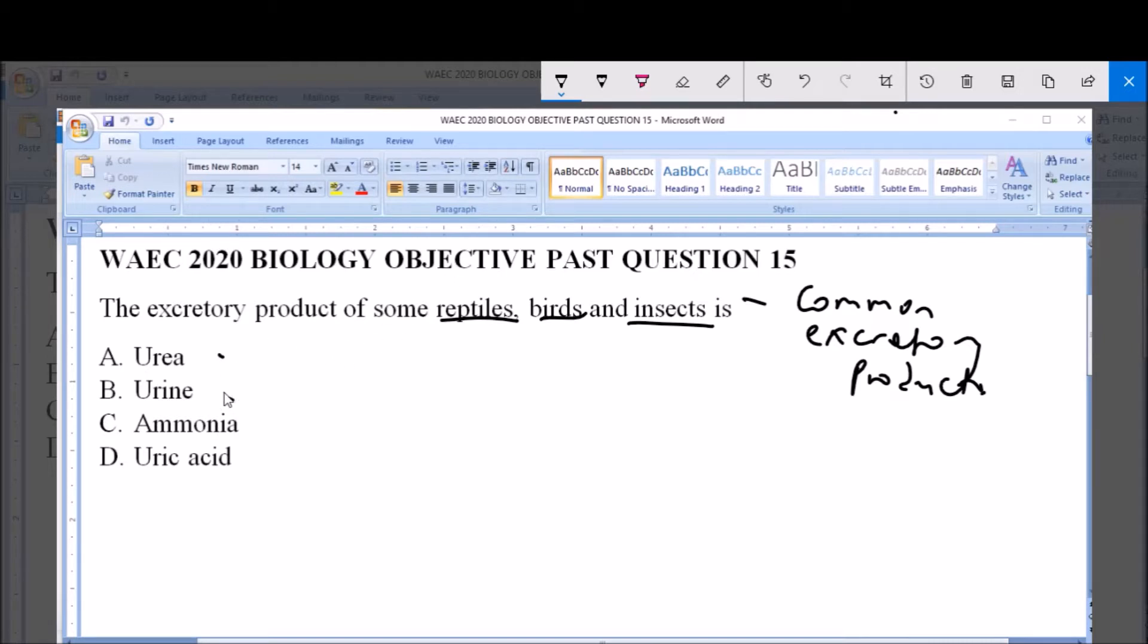Urea and urine are more or less known with mammals. Mammals are known for excretion of urea and urine mostly. Urea is part of the component of urine.